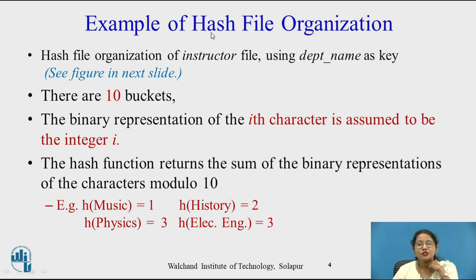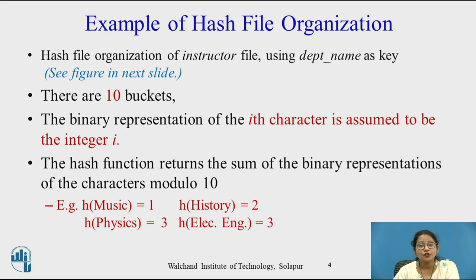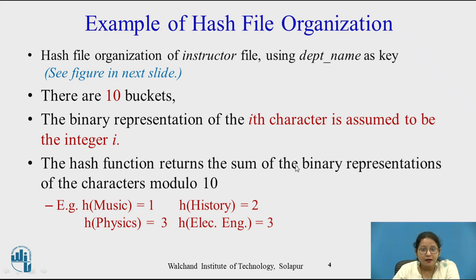We will see one example of hash file organization — hash file organization of an instructor file using department name as a key. There are 10 buckets. The binary representation of the i-th character is assumed to be integer hi. The hash function returns the sum of the binary representations of the characters modulo 10. So music goes to bucket 1, history to bucket 2, physics to bucket 3, and electrical engineering also to bucket 3.